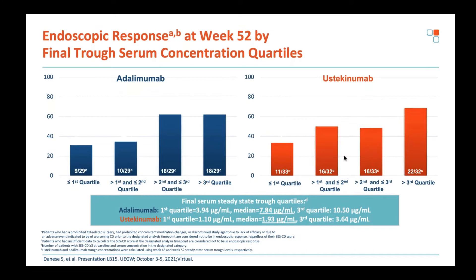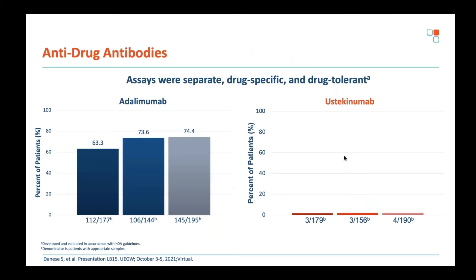It's worth watching for data from the SERENE study — the high-dose adalimumab study in UC and Crohn's disease — for PK insights, though that won't be out until UEG next year. When looking at endoscopic rather than clinical endpoints, you do still see an exposure-efficacy response. This mirrors the ustekinumab Stardust analysis, where the benefit of 8-weekly over 12-weekly dosing was seen specifically for endoscopic endpoints.